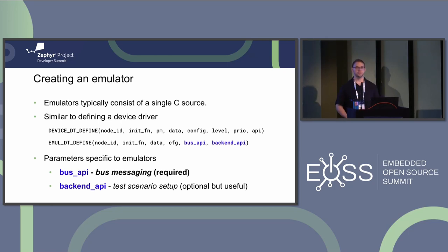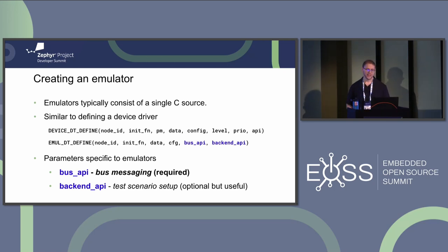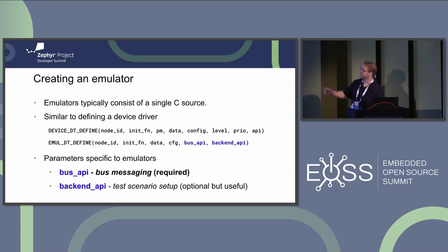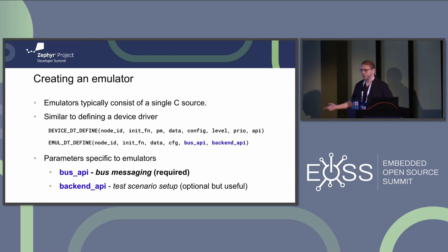We instantiate emulators similarly to how you'd instantiate a device driver in Zephyr. Where a driver uses DEVICE_DT_DEFINE with its various parameters, for emulators we have EMUL_DT_DEFINE. They share many of the same parameters: node ID, initialization function, private runtime data, and static configuration data. There are two parameters specific to EMUL_DT_DEFINE: the bus API and the backend API. The bus API implements how the emulator responds to bus messages — how to respond to an I2C read or write. The backend API allows the test to reach into the emulator state and set up test scenarios like low battery.